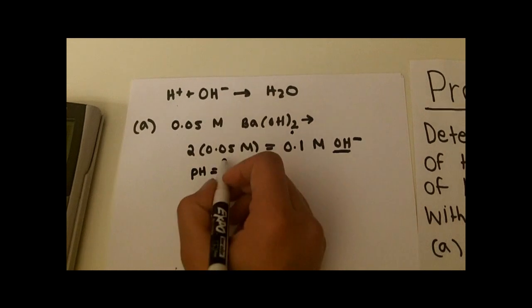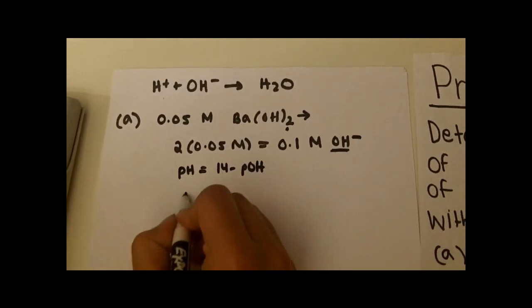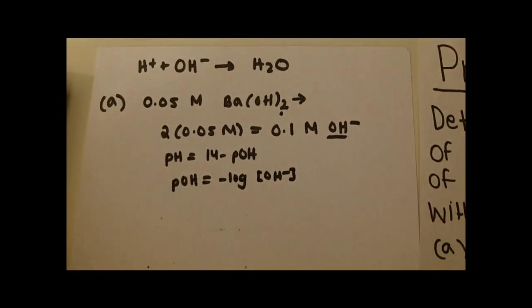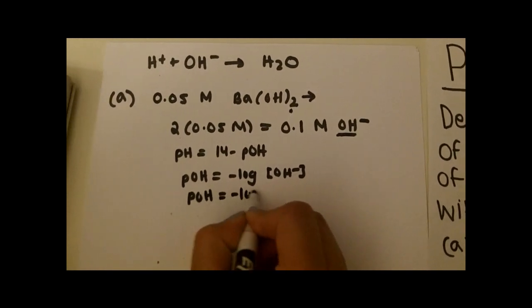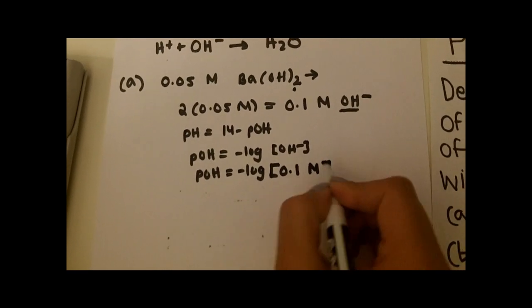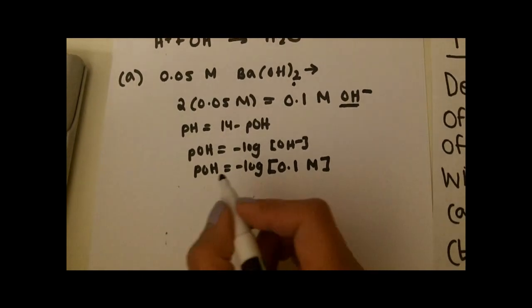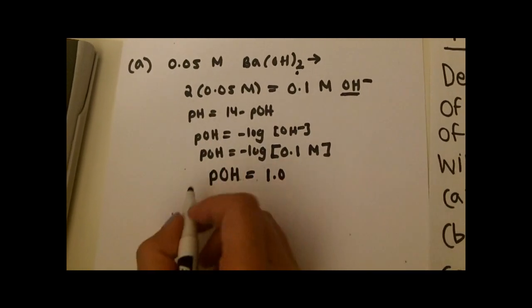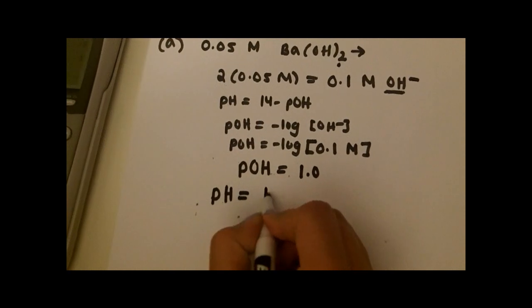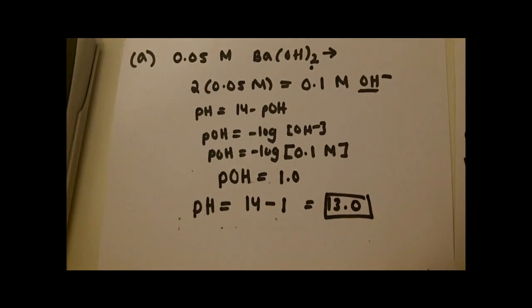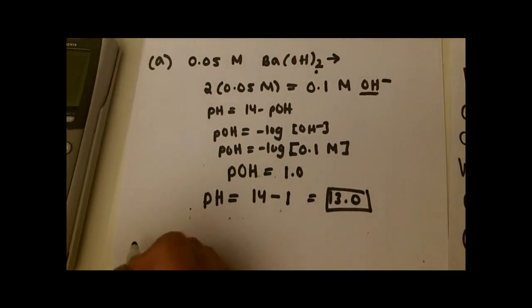pH is equal to 14 minus pOH. pOH is equal to the negative log of the hydroxide concentration. So pOH equals the negative log of 0.1 molar, which gives us simply 1. And therefore the pH is 14 minus 1, which is 13. That's the pH when no nitric acid is added.